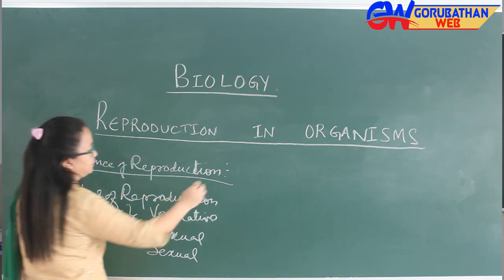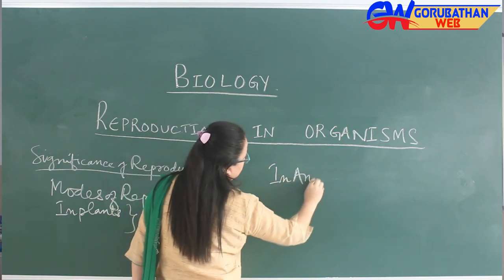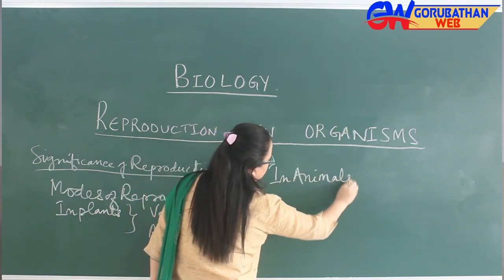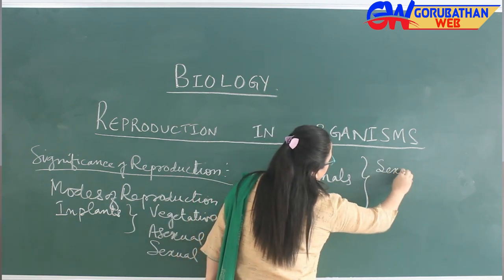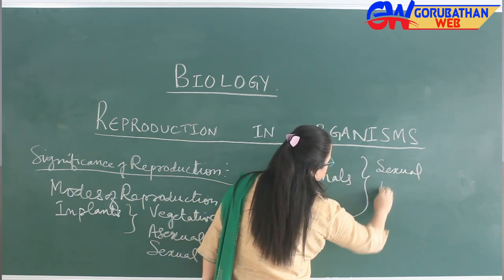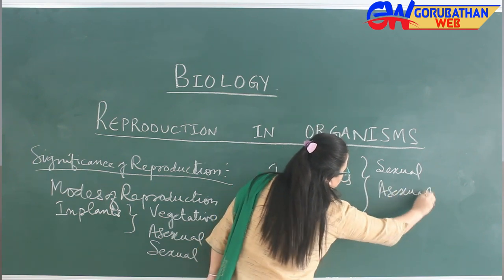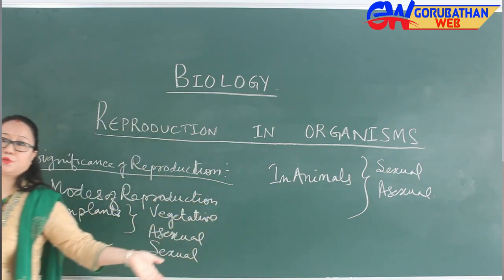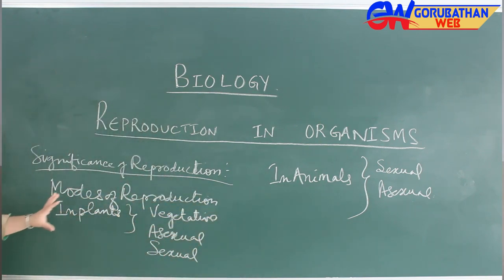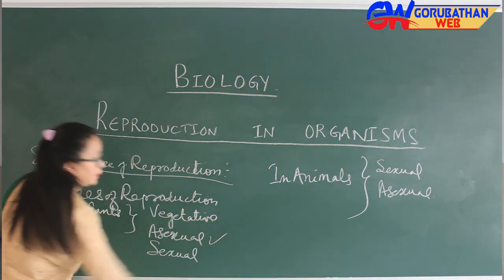And in animals, two types of reproductions are noted, that is sexual and asexual. Sometimes some animals also reproduce parthenogenetically. There are different types of reproductions, but I will mainly focus on asexual reproduction.